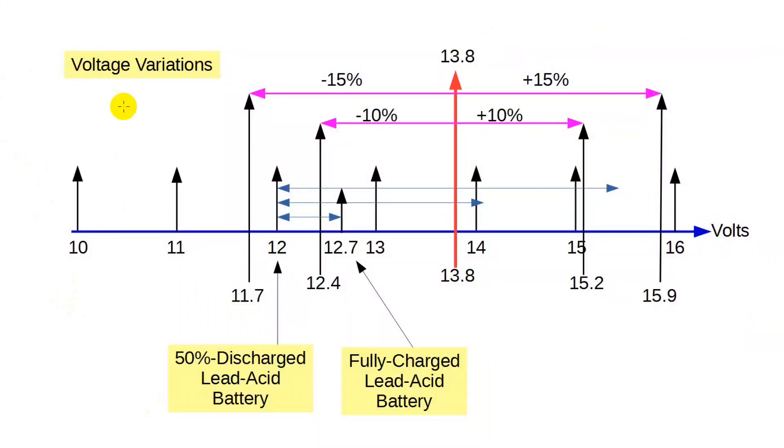Let's take a close look at this diagram that shows various allowable and non-allowable voltage variations. First of all, the horizontal blue line is in volts. At the left is 10 volts, 11, and so on, up to 16 volts. Now, a lead acid storage battery that's not being charged or discharged sits at 12 volts when 50% charged and 12.7 volts when fully charged. That's this range right here.